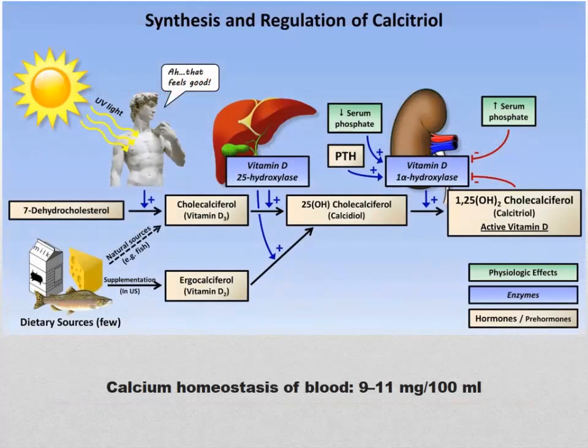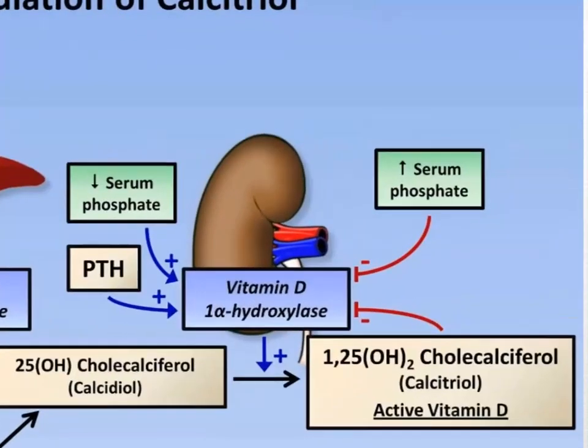Getting into our three big hormonal mechanisms. The first one — look at this term calcitriol on the right. This is our activated vitamin D. UV light makes a reaction in our skin that causes the liver and kidney through several processes to produce activated vitamin D, which we call calcitriol.